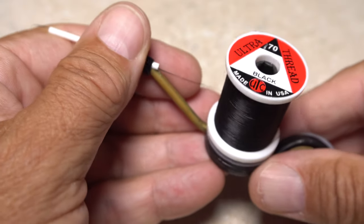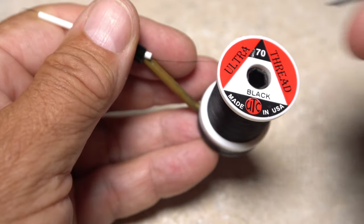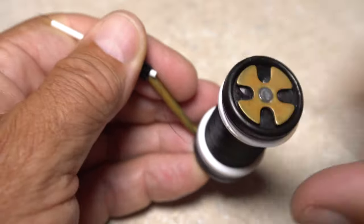For thread, UTC 70 denier in black works well, and on this larger hook, you can even bump up to 140 if you like.